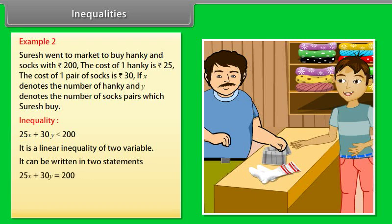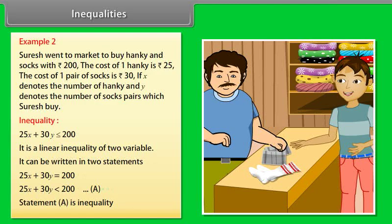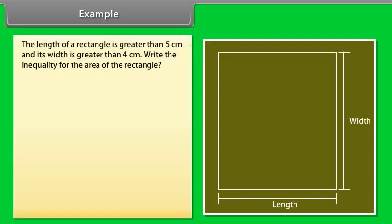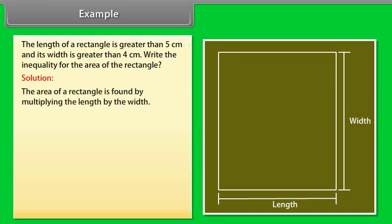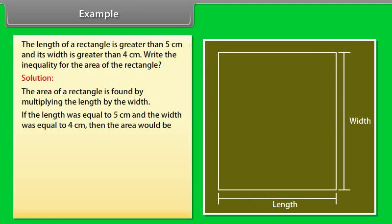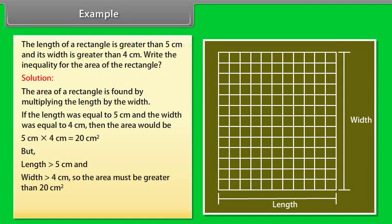It can be written in two statements: 25x + 30y = 200, and 25x + 30y < 200, named as Statement A. Statement A is an equality in this case. Example: The length of a rectangle is greater than 5 cm and its width is greater than 4 cm. The area is found by multiplying length by width. If length equaled 5 cm and width equaled 4 cm, area would be 20 cm². But since length > 5 and width > 4, the area is greater than 20 cm².